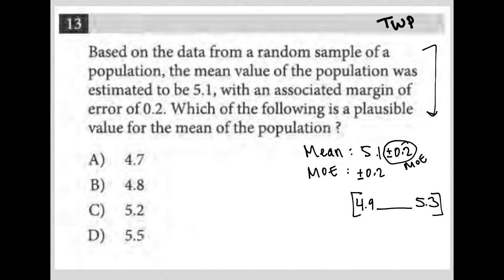So, which of the following is a plausible value for the mean of the population? 4.7? No, because that's less than the 4.9. 4.8, also no, because that's also less than 4.9.